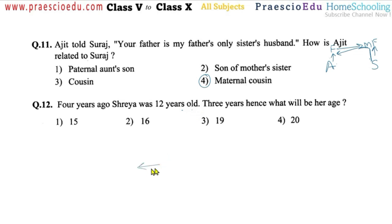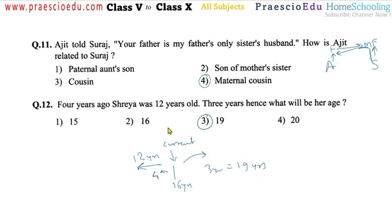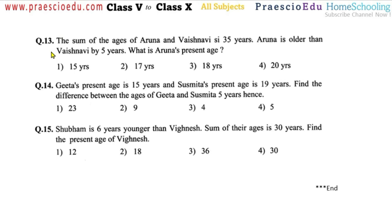Question number twelve: four years ago Shreya was 12 years old. Four years ago is to the left; current time is now. Four years back her age was 12, so currently she is 12 plus 4 equals 16 years old. The question asks: three years hence, what will be her age? After three years: 16 plus 3 equals 19 years. So option number three is correct.